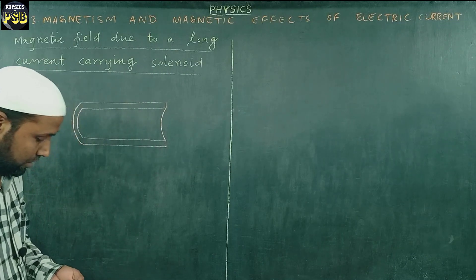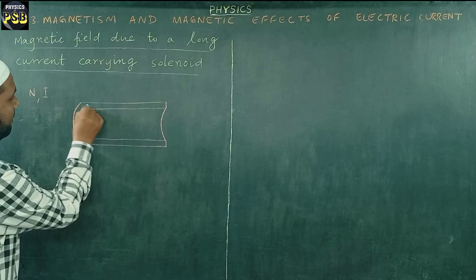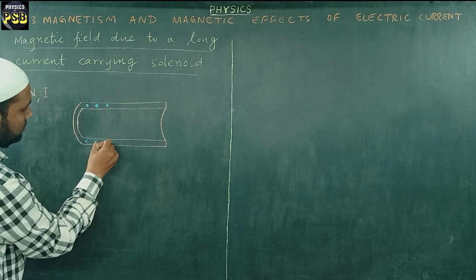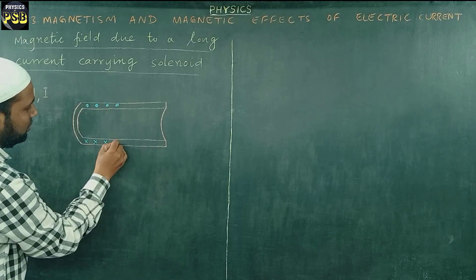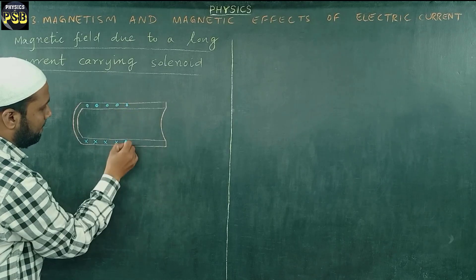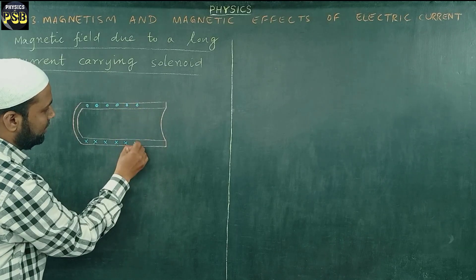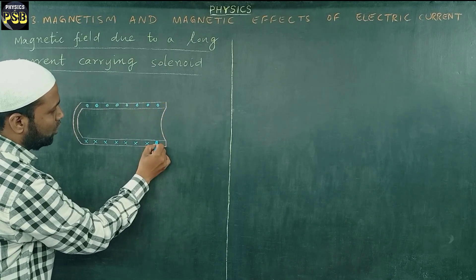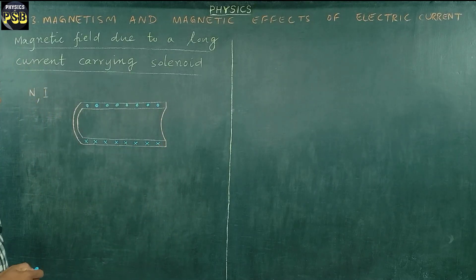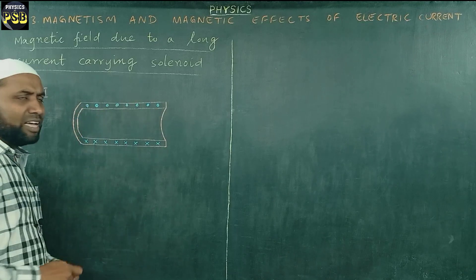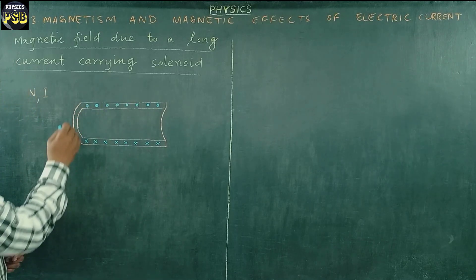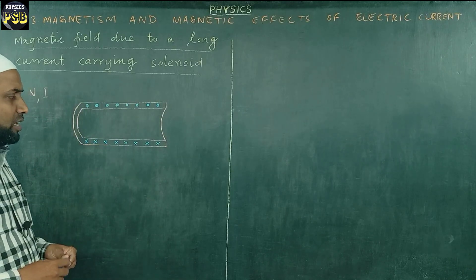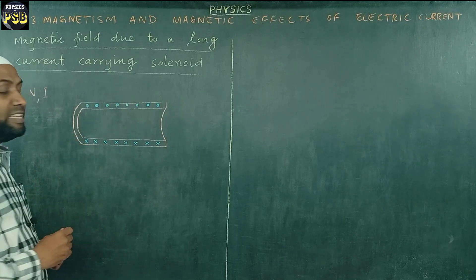The windings of the solenoid appear like this. You can see the windings with dots and crosses. These dots and crosses belong to different loops. Here, dots represent the outward flow of current, whereas the crosses represent the inward flow of current.